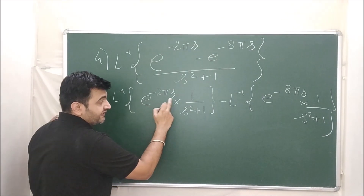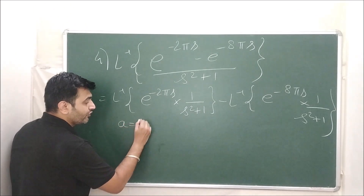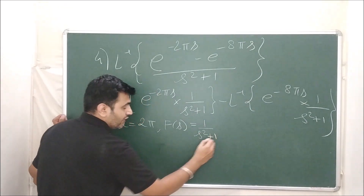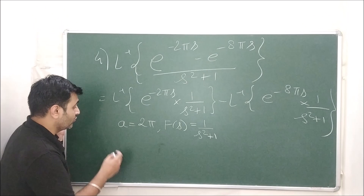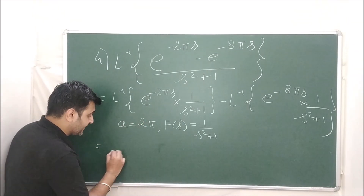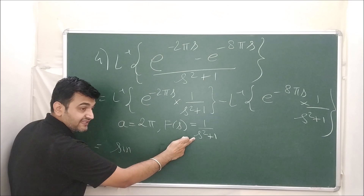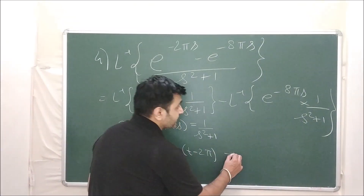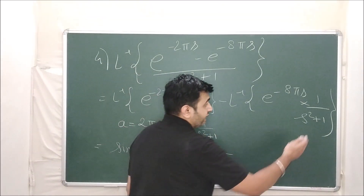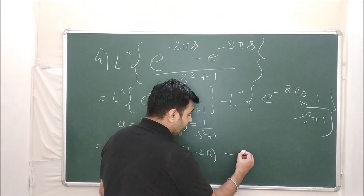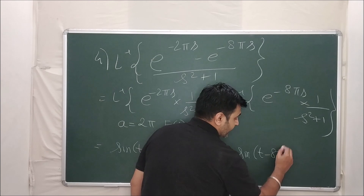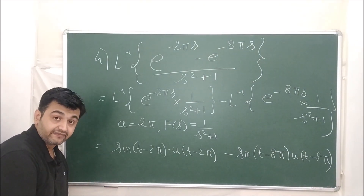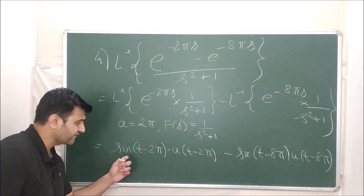For the first term, comparing with L⁻¹{e^(−as) · F(s)}: a = 2π and F(s) = 1/(s² + 1), whose inverse is sin(t). By the second shifting theorem this is sin(t − 2π) · u(t − 2π). For the second term, a = 8π and F(s) = 1/(s² + 1) again, so it gives sin(t − 8π) · u(t − 8π).